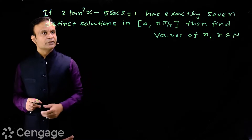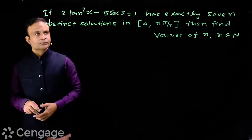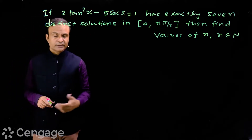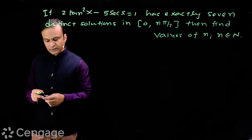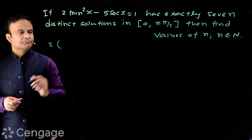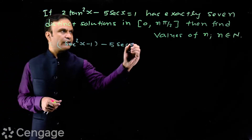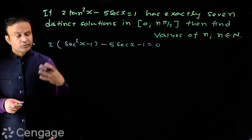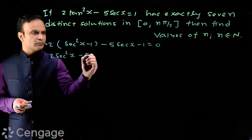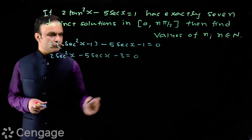First of all, let us simplify this equation. We have terms tan²x and sec x. We can convert tan²x in terms of sec²x using the identity. So we have 2 multiplied by (sec²x minus 1) minus 5sec x minus 1, which equals 0. This gives us a quadratic equation in sec x: 2sec²x minus 5sec x minus 3 is equal to 0.